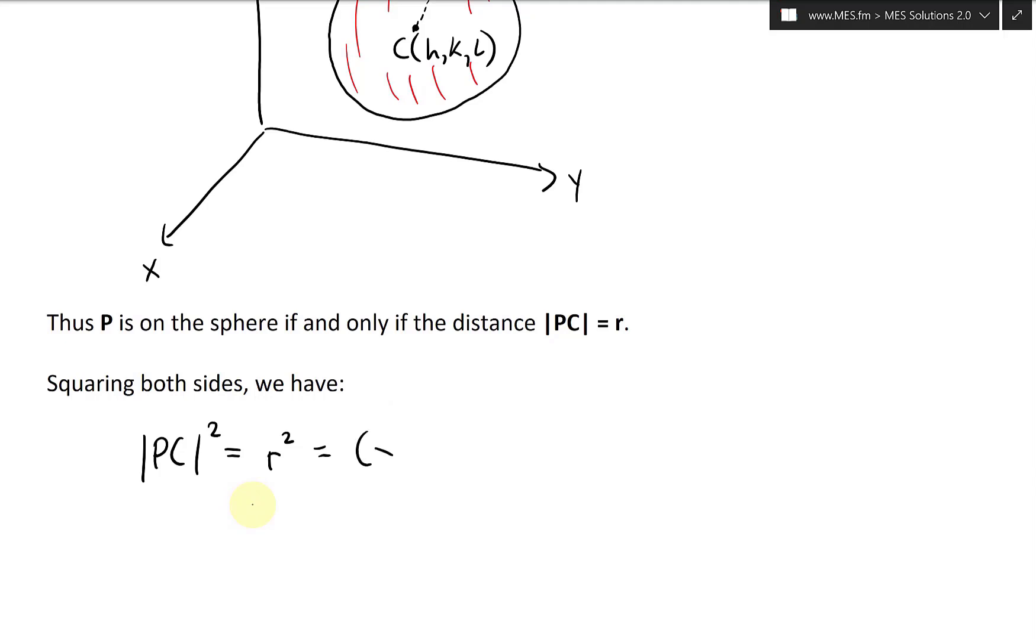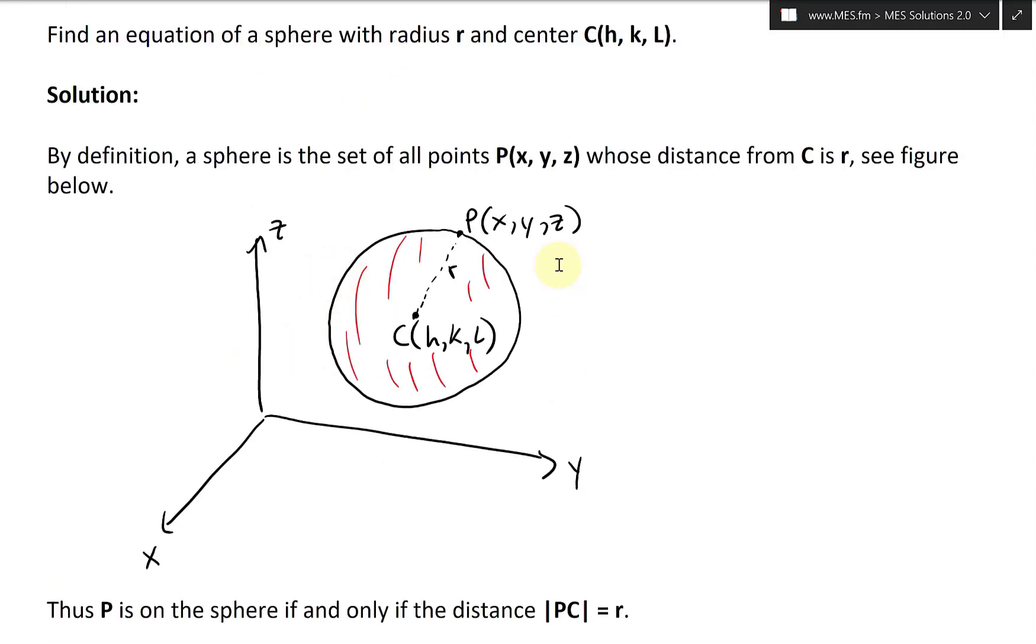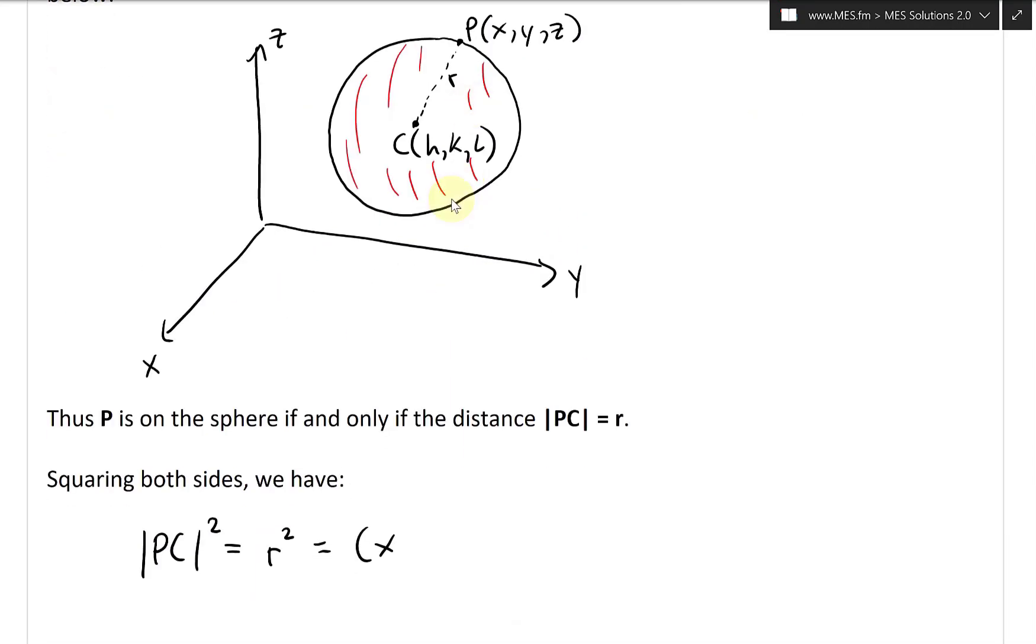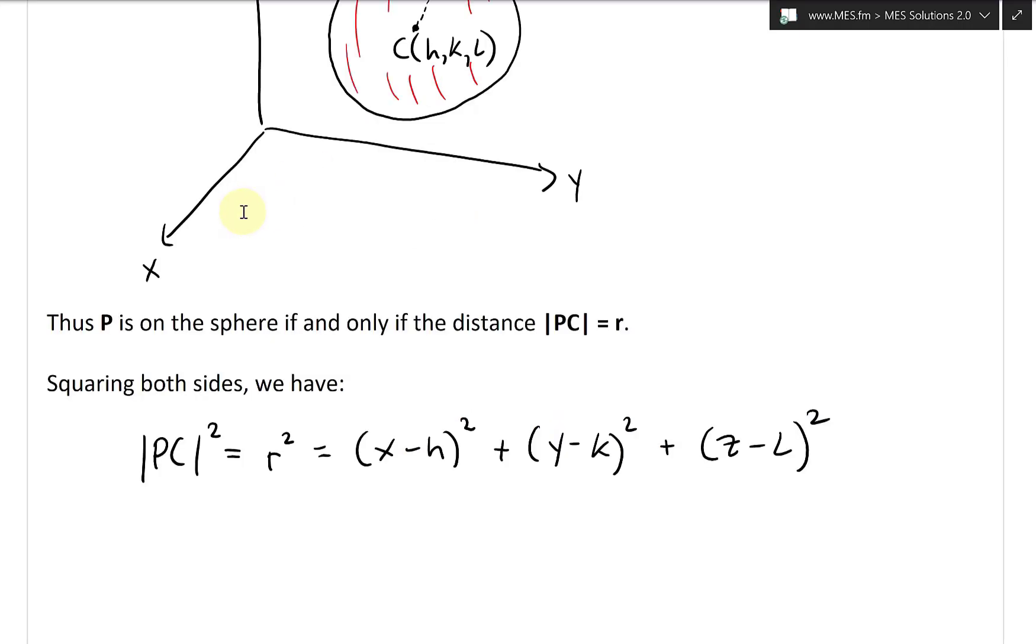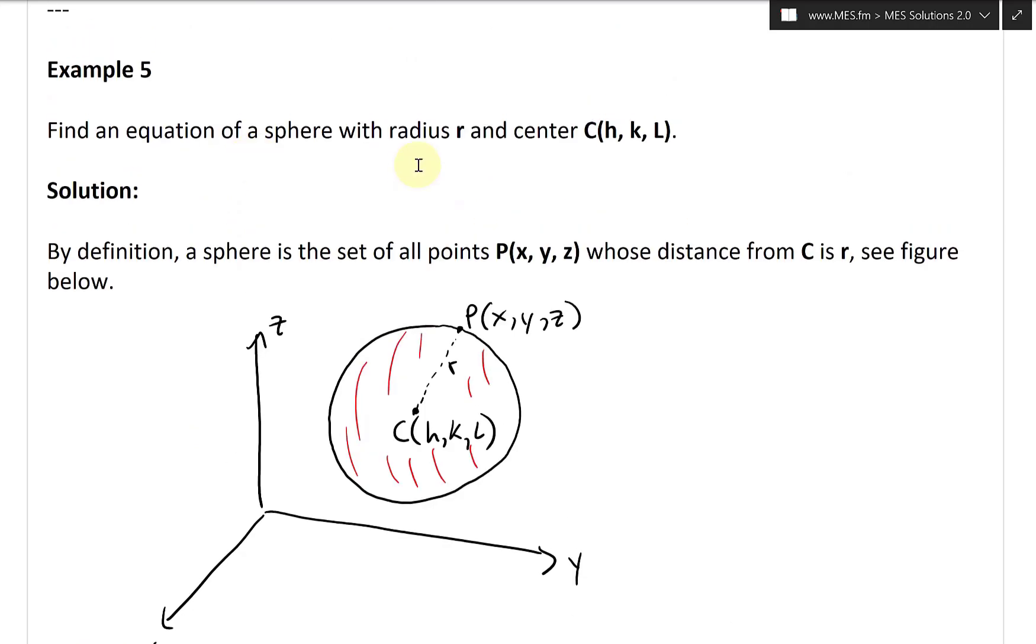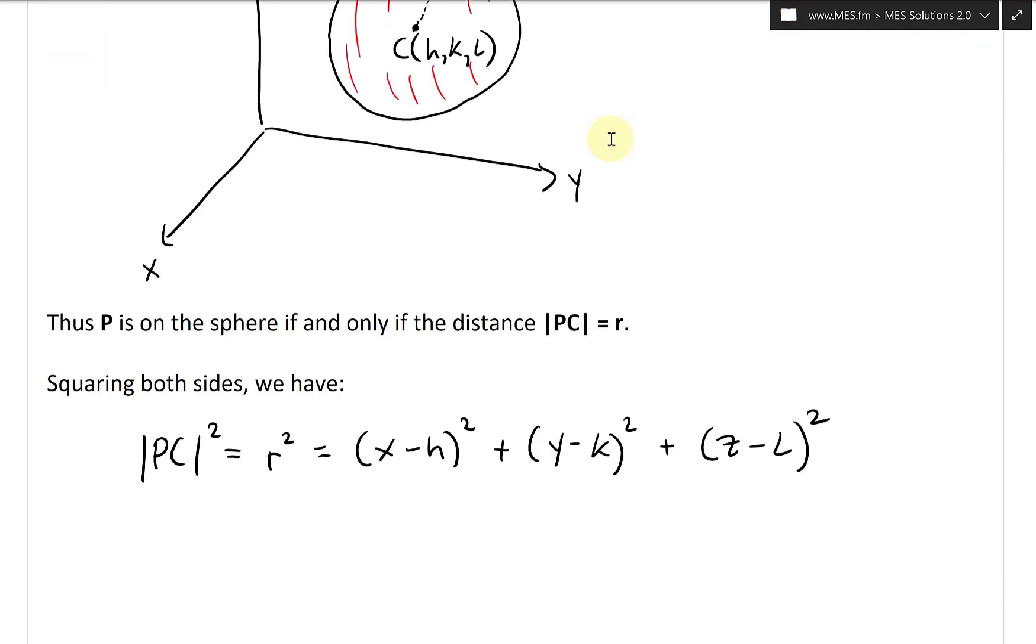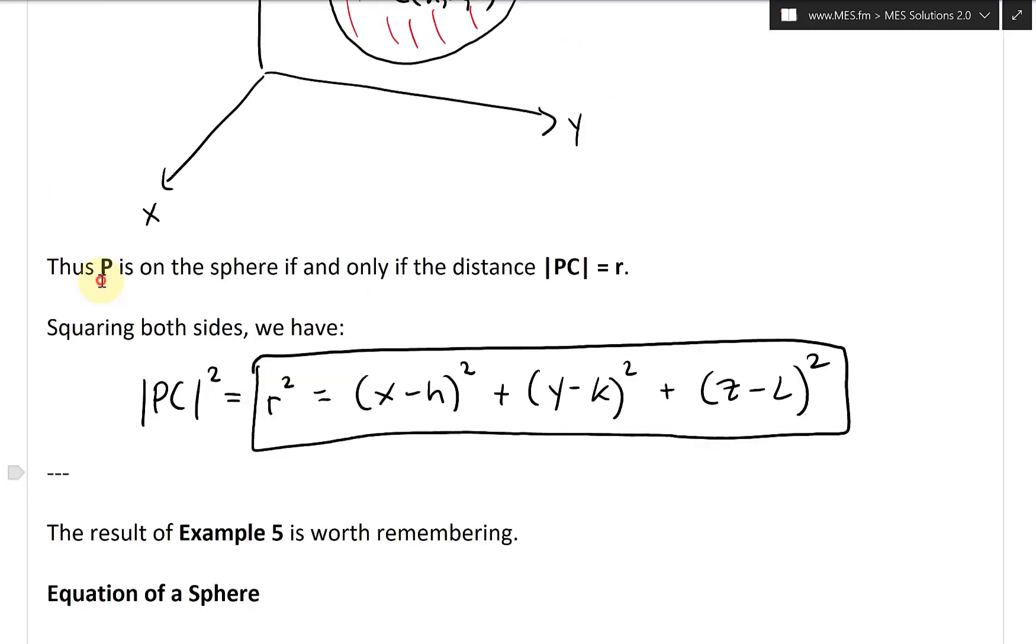This becomes (X minus H) squared, plus (Y minus K) squared, plus (Z minus L) squared. So thus our equation of a sphere with radius R and center C(H, K, L) is just this. So we'll box this R squared—there's the equation of a sphere.